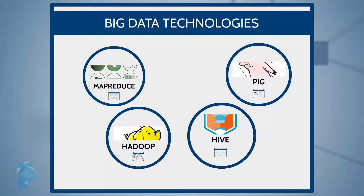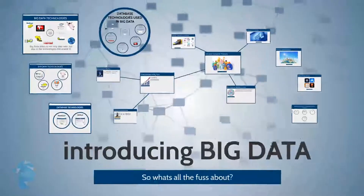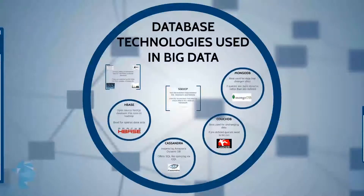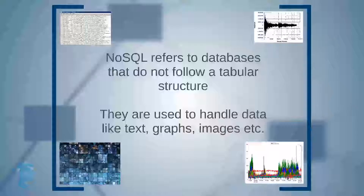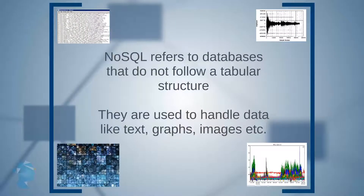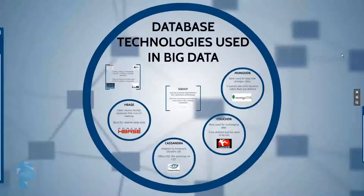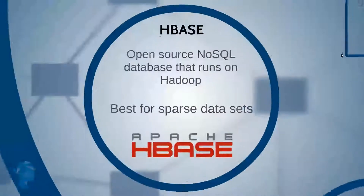So there is now a choice: if you are familiar with Python, use Pig; if you have knowledge of SQL, use Hive. In either case, you get away from the time-consuming job of writing MapReduce queries. We've now looked at four popular big data technologies: MapReduce, Hadoop, Pig, and Hive. Next, we need to understand NoSQL databases. NoSQL refers to databases that do not follow traditional tabular structures and are used to handle data that doesn't fit into a table-like format — such as text, graphs, or images.